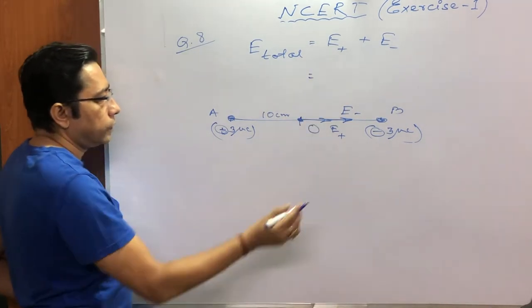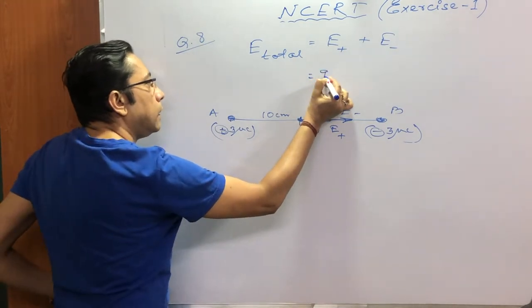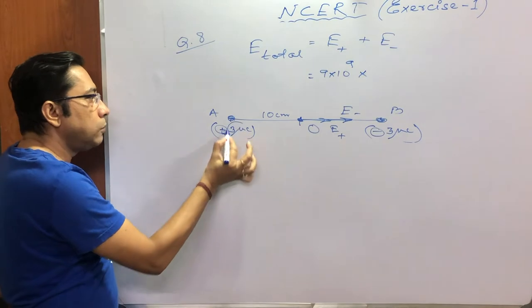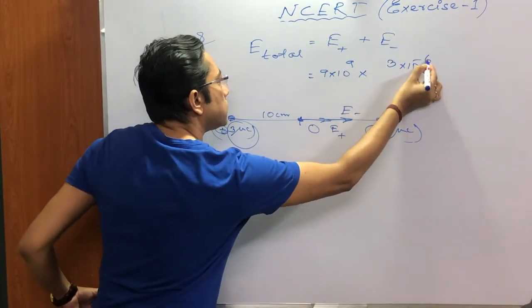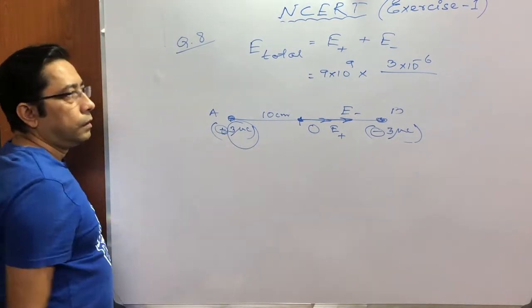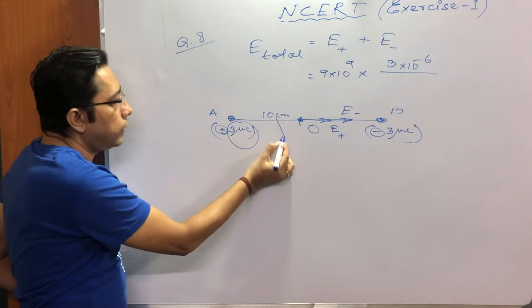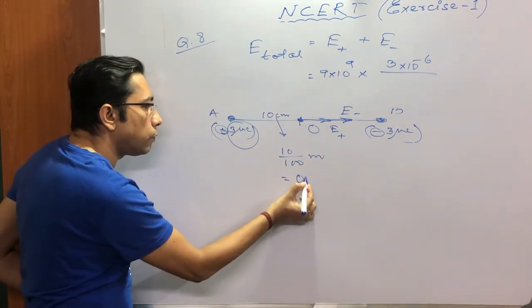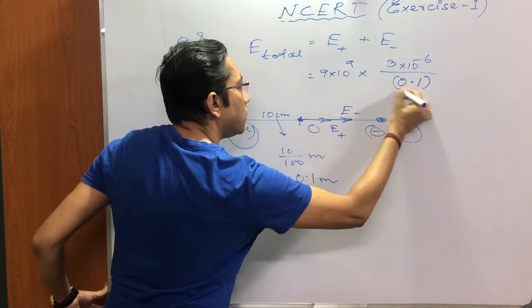What would be the values? Let us calculate electric field due to A at this point. We know the formula: 9 times 10 to the power 9, Q is 3 into 10 to the power minus 6 microcoulomb, divided by R square. R is 10 centimeter, we can write 10 centimeter to be 0.1 meter, so divided by 0.1 whole square.